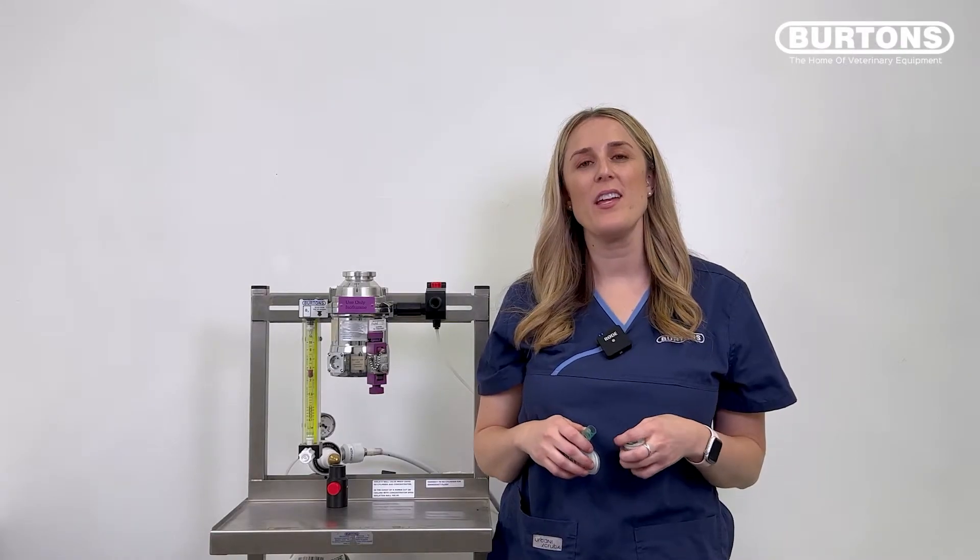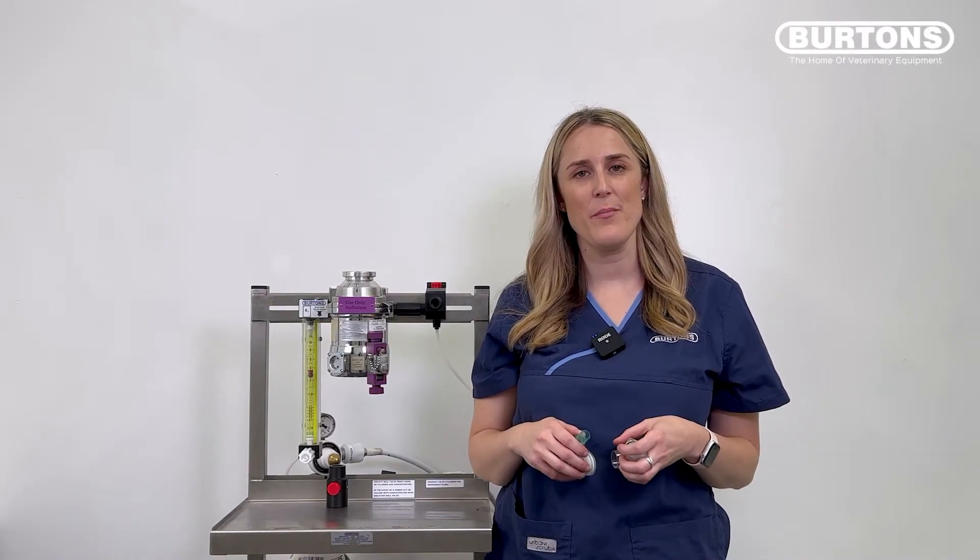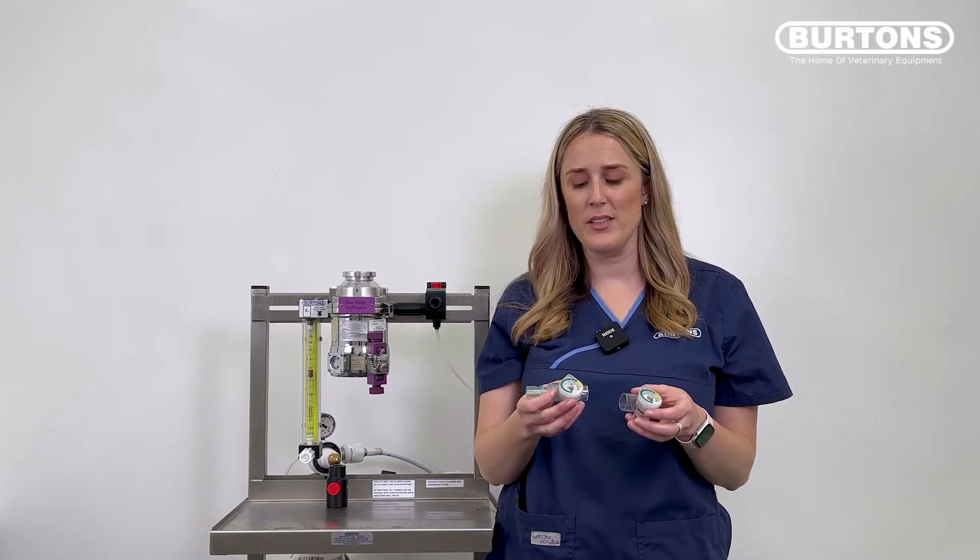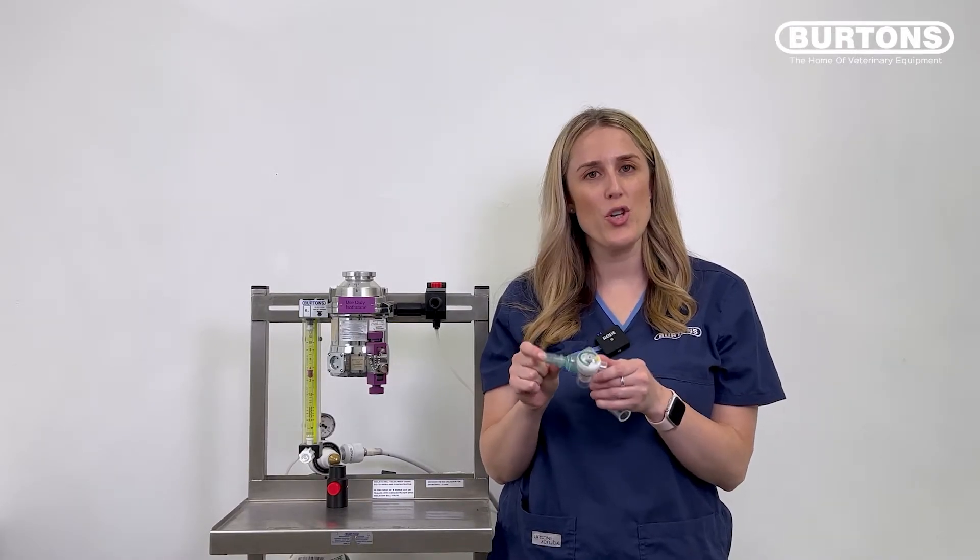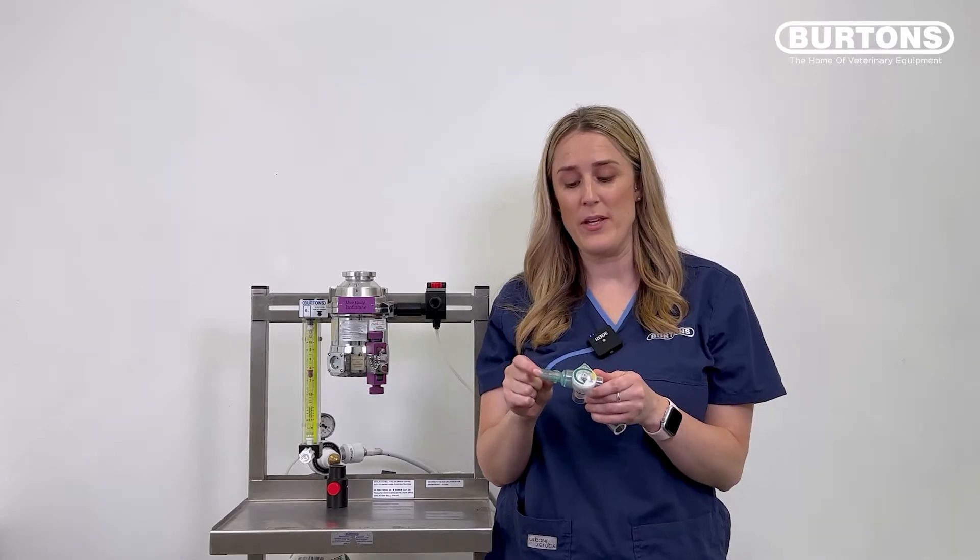We also have a manometer that you can use with a T-piece breathing system. You'll see that they look very similar except with the T-piece version there is an extra attachment that will accommodate the narrow bore tubing that is part of the T-piece breathing system.